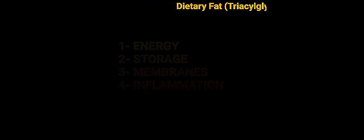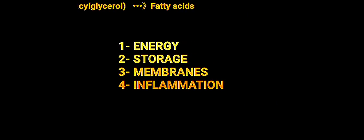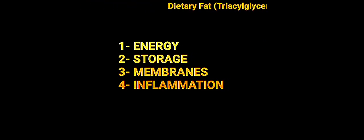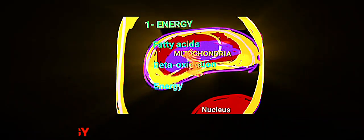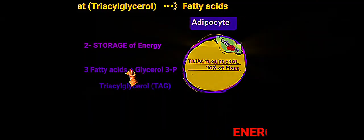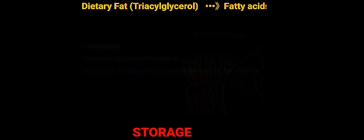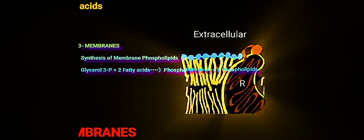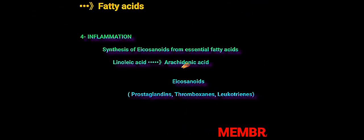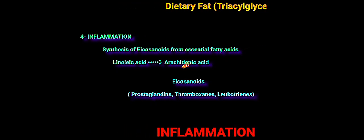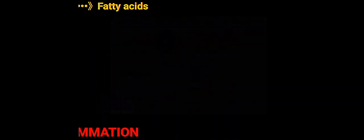Fatty acids play at least four important roles: in energy production, in energy storage, in membrane synthesis, and in inflammation. Fatty acid beta oxidation in the mitochondria is the major energy-producing pathway from dietary and stored lipids. Fatty acids are stored in the form of triacylglycerol in adipocytes and provide many tissues with the energy they need during fasting. Phospholipids, the major membrane components, are made from fatty acids and glycerophosphate. The essential fatty acid linoleic acid is the precursor of arachidonic acid, which in turn is the precursor of all eicosanoids.